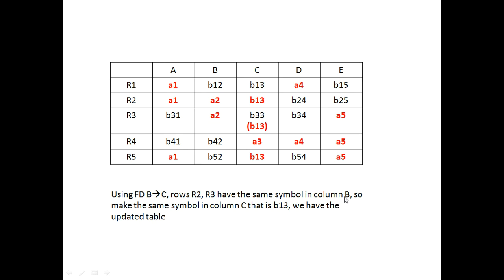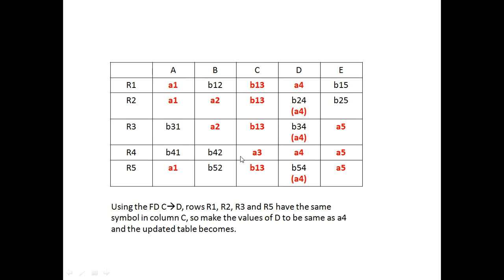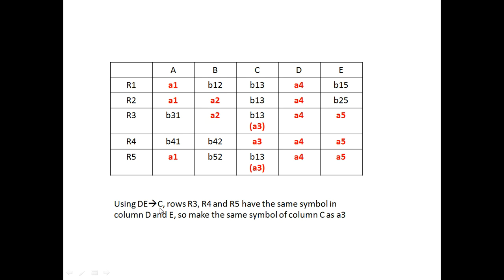Now using FD C→D: rows R1, R2, R3, and R5 all contain b13 in column C, so they must have the same symbol in column D. We update b24, b34, and b54 to a4. Next, using FD D→C: rows R3, R4, and R5 have the same symbol in column D, so column C must also have the same symbol. We make all those C values a3.